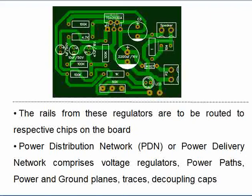The voltage rails generated from the voltage regulator modules are routed to different parts of the board. They could provide 3.3 volts to a particular IC, or 1.8 volts, or 1.2 volts — there will be a number of power supplies. These supplies can be routed as a plane or as individual traces.